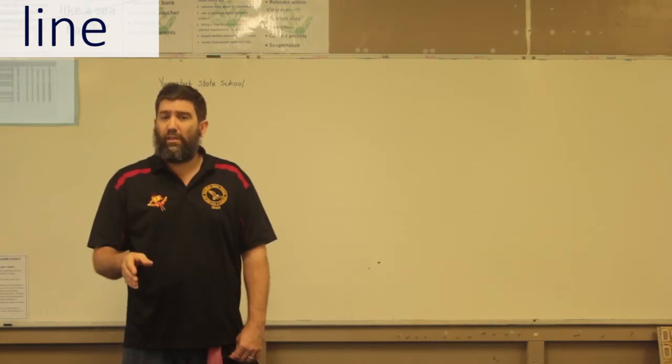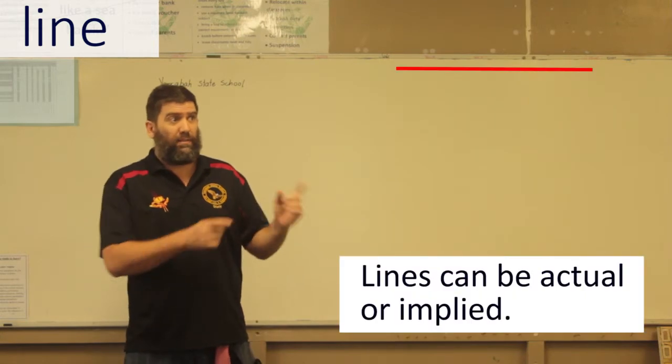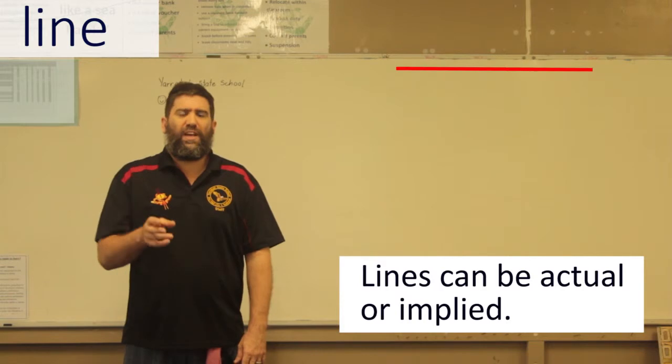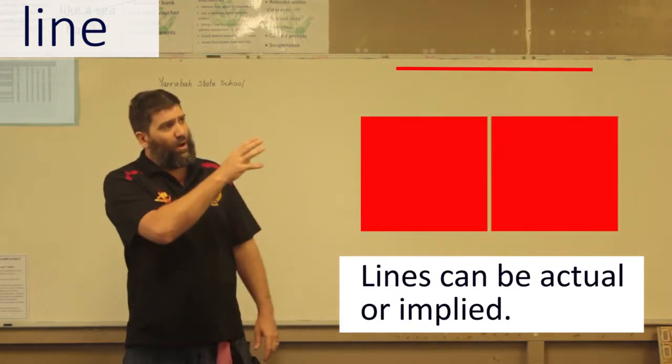Last thing that I want to talk about lines is that lines can be actual. Here's an actual line or lines can be implied. What that means is that if I show two shapes here, this one and this one...